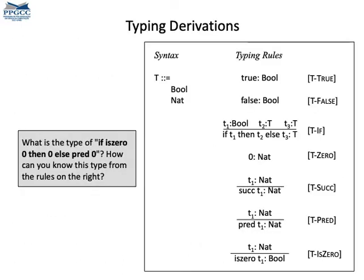The typing rules let us derive the type of each expression in a program. For instance, that's the type of if iszero zero, then zero, else pred zero. I mean, what's the type of this expression? Would you like to stop the video and think about it?